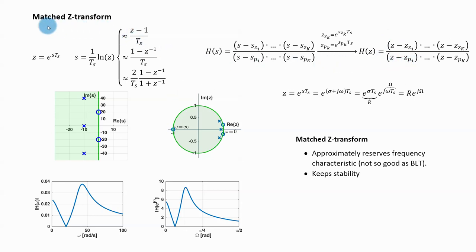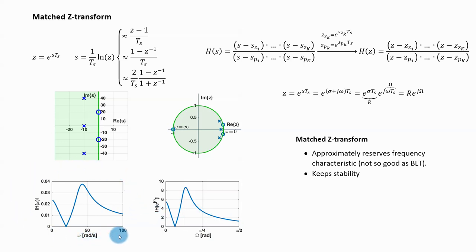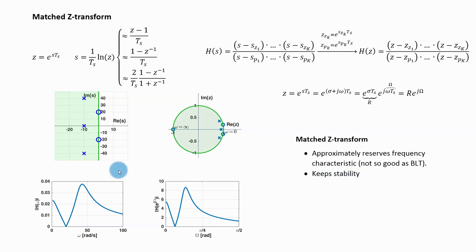The matched Z-transform tends to keep the shape of the frequency characteristic, and the resulting discrete system's frequency characteristic corresponds nicely to the continuous time one. However, for more complex frequency characteristics the matched Z-transform does not work as well as the bilinear transform, so the bilinear transform is usually preferred. The matched Z-transform also keeps stability, since all left-half S-plane points map within the unit circle.